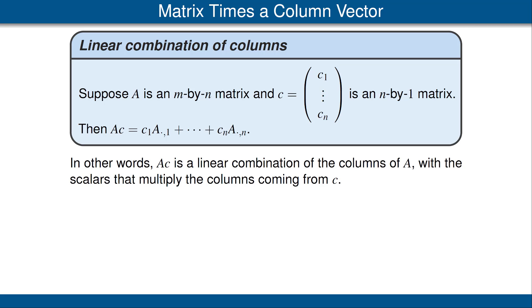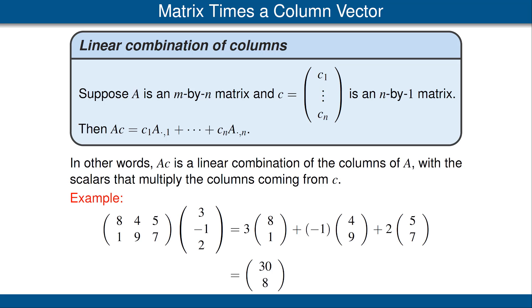Sometimes a matrix with only one column is called a column vector. There's a special way to think about matrix multiplication when the second matrix is a column vector. Suppose A is an M by N matrix and C is an N by 1 matrix — a column vector. Then A times C is a linear combination of the columns of A, with the scalars multiplying the columns coming from C. For example, here we have a 2 by 3 matrix multiplying a column vector with entries 3, negative 1, 2. The product is obtained by taking the columns of the first matrix, multiplying each by the corresponding entry from the column vector, and adding them up. Make sure you understand this example.